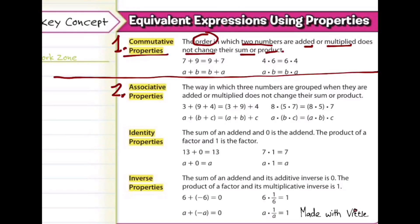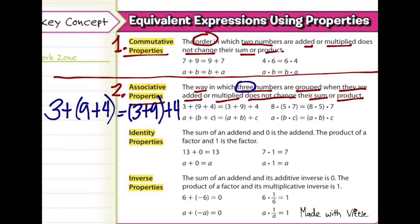So the next property is associative properties. It is the way in which three numbers are grouped when they are added or multiplied and does not change their sum or product. So if I have three numbers such as 3 plus, then inside the parenthesis is 9 plus 4, that's still going to be the same thing as when I have 3 plus 9 inside the parenthesis and then the plus 4 is outside. So according to PEMDAS, we have to do everything inside the parenthesis first.